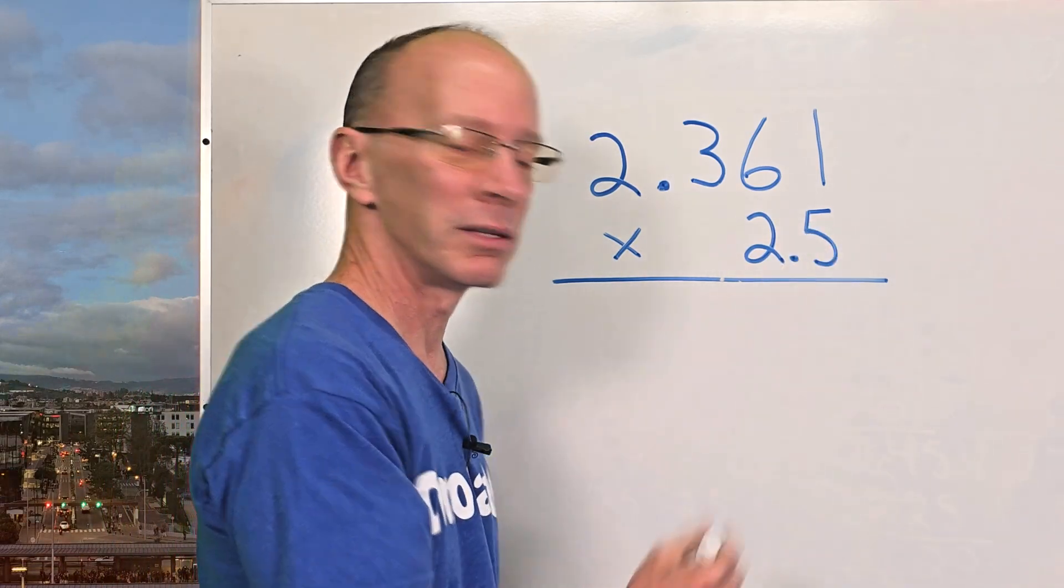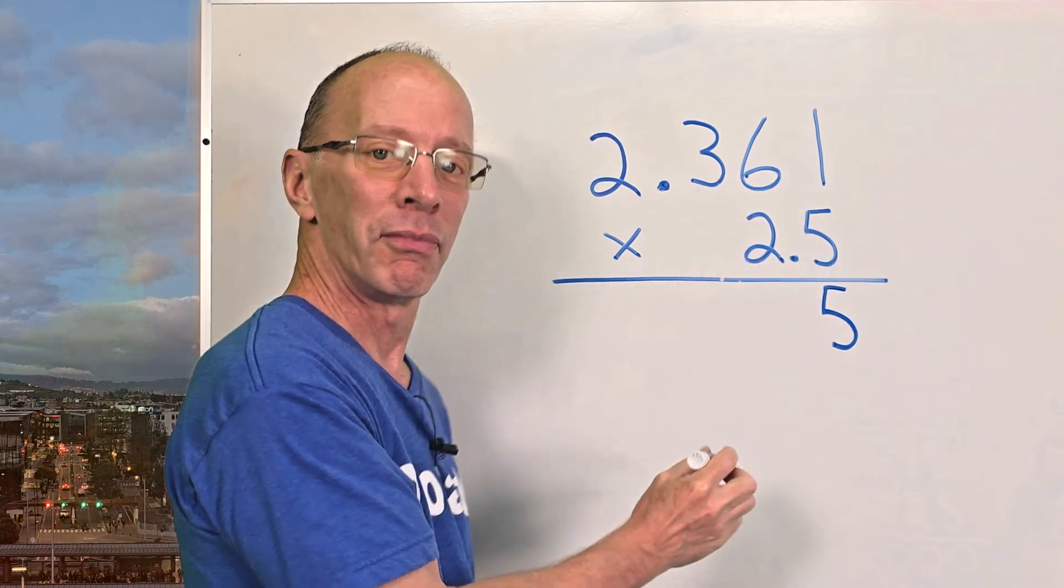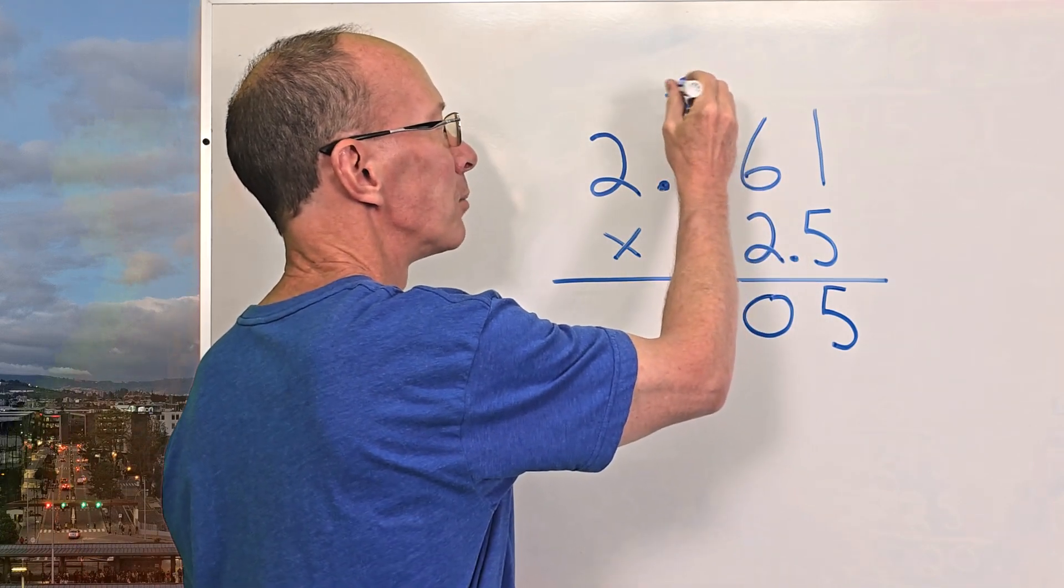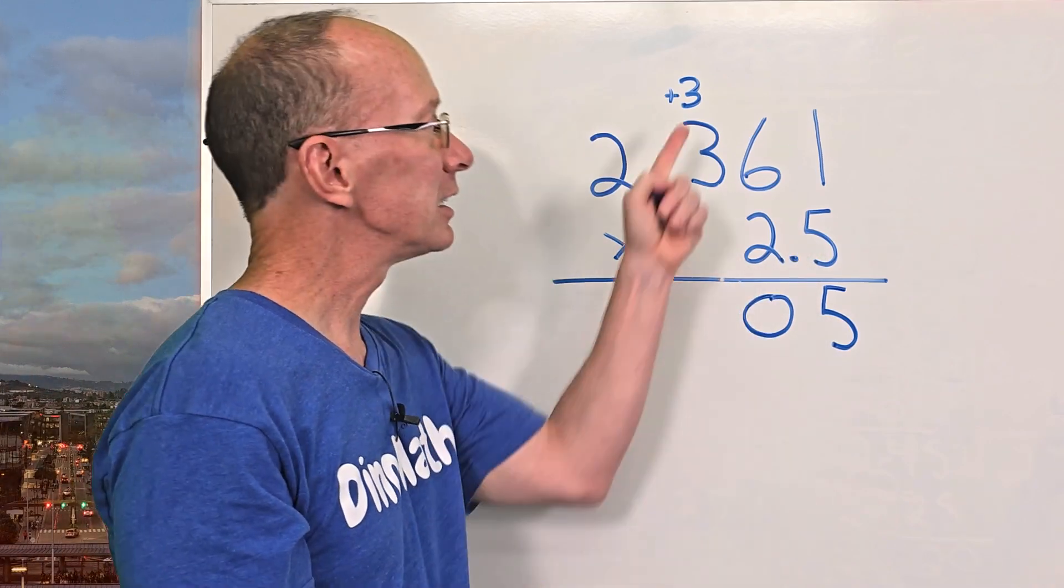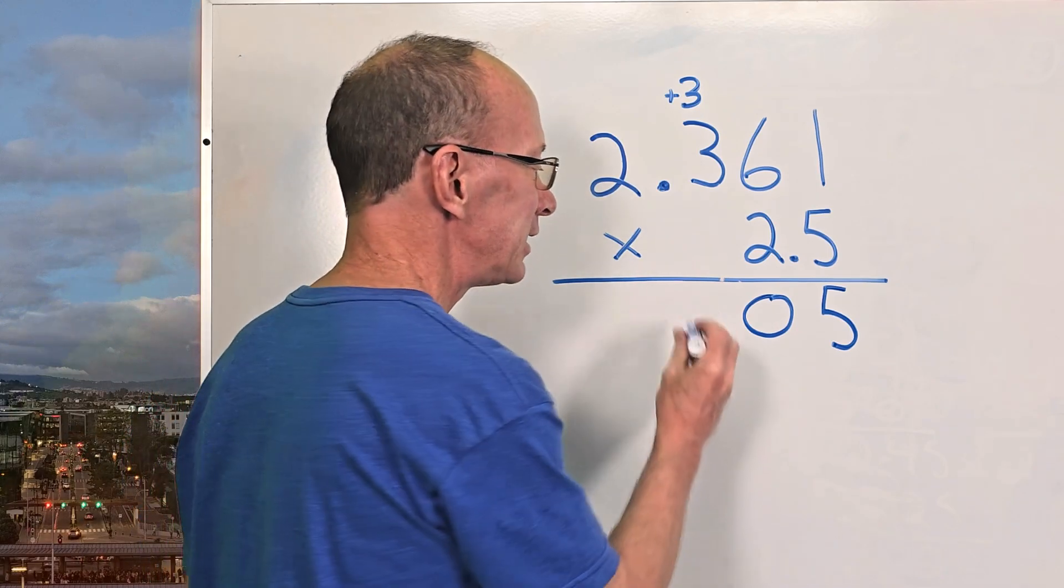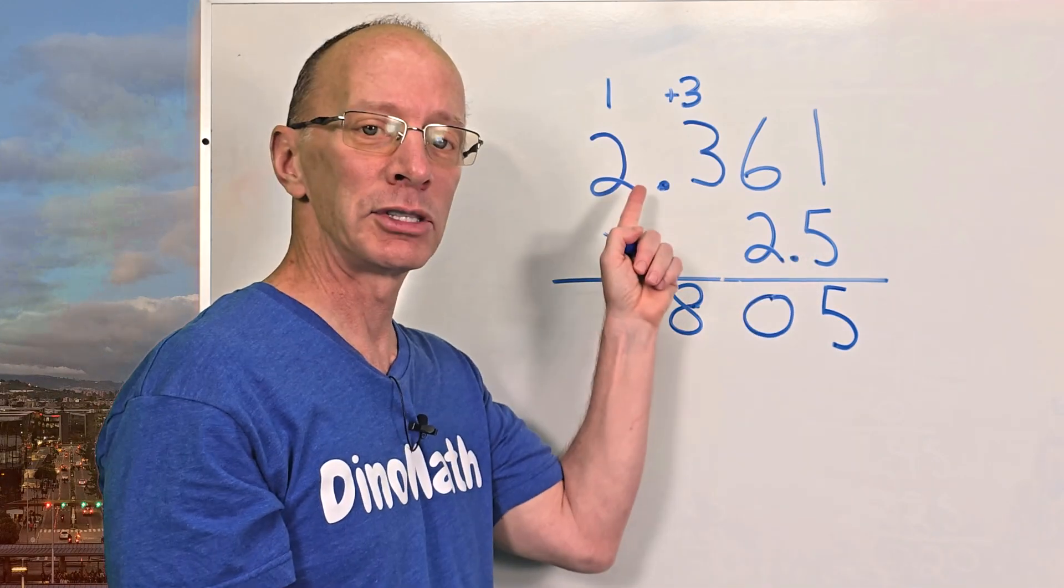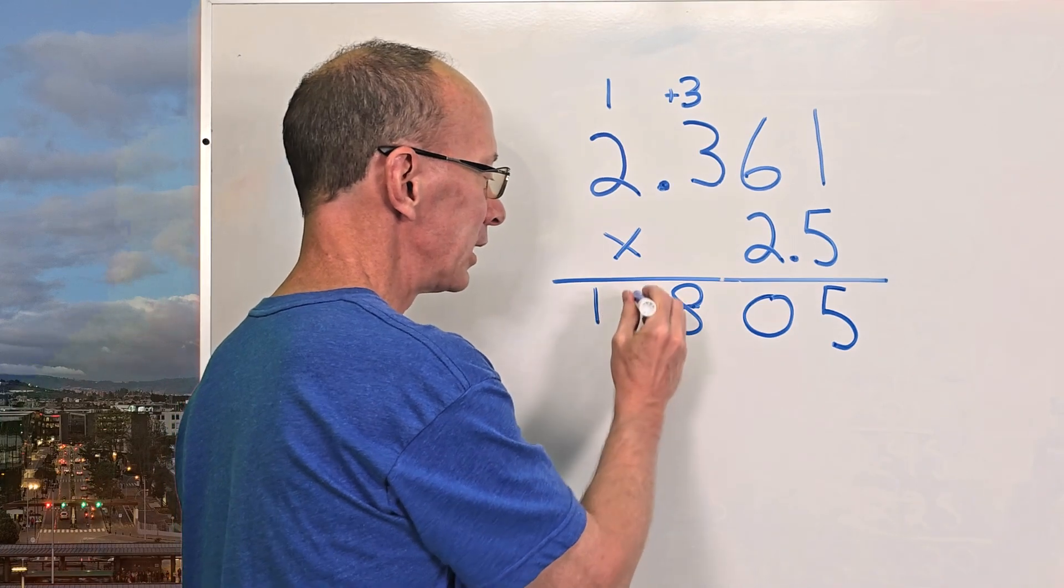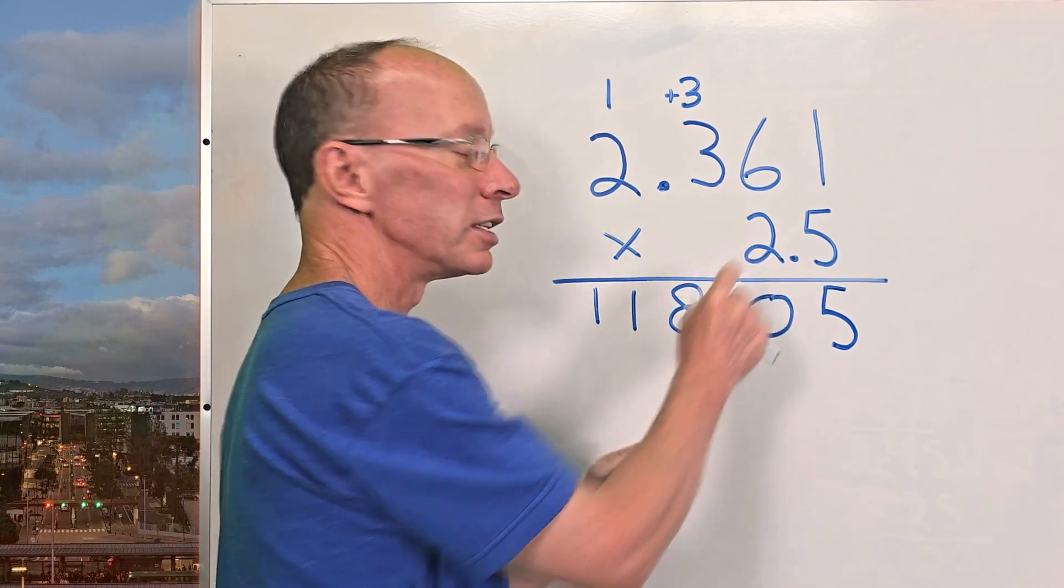So first of all, five times one, five. So I'm going to put five right here. Five times six, 30. So I put the zero right here and I put the three right up here. Remember, I'm going to add that three on my next step. Five times three is 15, 16, 17, 18. That's when I add that three. So it's 18. So I put the eight right here and then carry the one. Then five times two is 10 plus the one, 11. So I put 11 right there. That's all I have to do right now. Now I go over to the two.